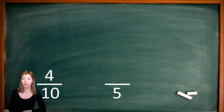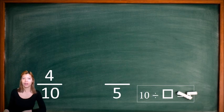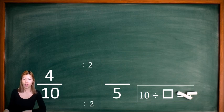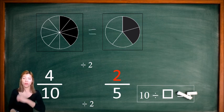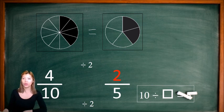We can also look at it in reverse. Four over ten is equivalent to what? Ten divided by two becomes five, so if I divide the top by two as well, will I get the equivalent fraction? Looking at the diagram, these two diagrams look exactly the same — they are equivalent fractions. We have four over ten and two over five. So we can divide the top and bottom number to get equivalent fractions as well.